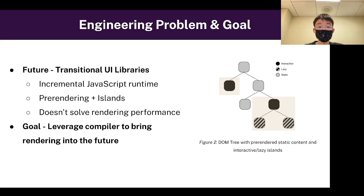This is great, but it doesn't solve the actual rendering performance of the UI library. When regions become interactive, they still use the same rendering algorithm. Basically, the goal is to leverage the compiler to bring rendering into the future.